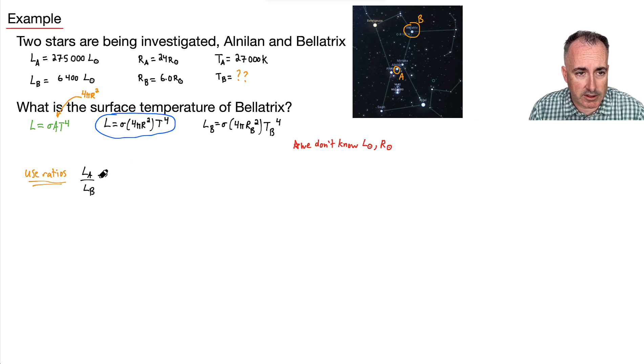So that means I'm going to make myself an equation for LA, and I'm going to divide that by LB. So let's see here. Let's actually start doing it. So LA, well, it's going to be sigma times four times pi times RA squared. All that times TA to the fourth.